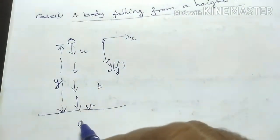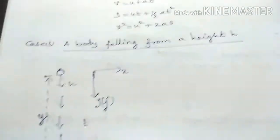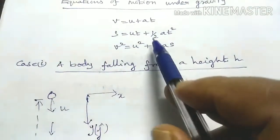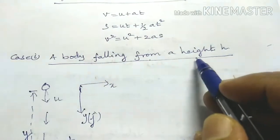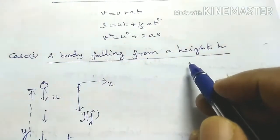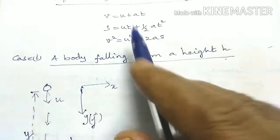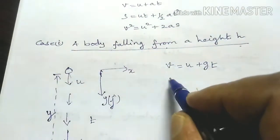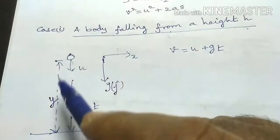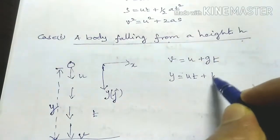In downward motion, the acceleration equals the acceleration due to gravity g. The first equation is v equal to u plus gt. The second equation gives the acceleration equal to g, and the vertical displacement is y.